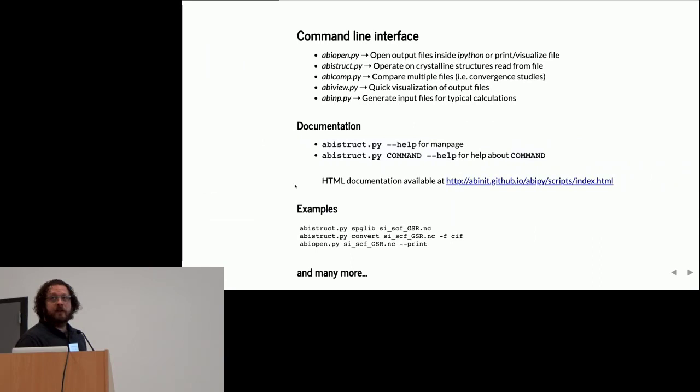We have five scripts designed for different tasks. The first one, abiopen, operates on a single output file to visualize data. Abistruct operates on crystalline structures initialized from external files. Then we have abicomp to compare multiple files and perform convergence studies. Finally, we have abiview for quick visualization of the results, and the last script is a very simplified interface to the machinery we use to generate input files.